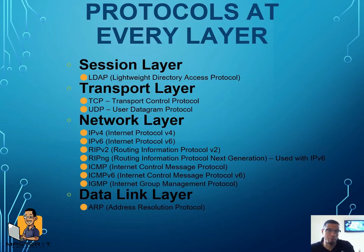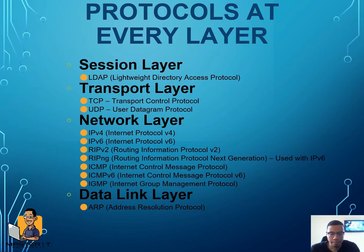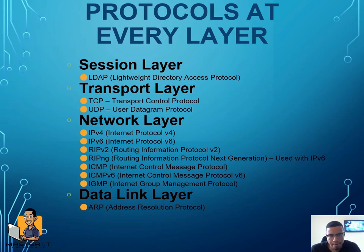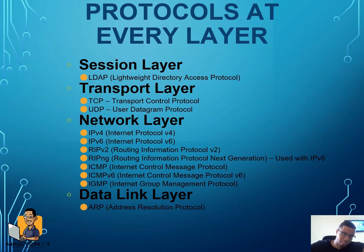Now I'm going to skip over the presentation layer, which is the sixth layer, and go to the fifth layer — the session layer. Then we have the transport, network, and data link layers. The session layer is layer five. One of the protocols that works there is LDAP, which is pretty much just a directory — like a yellow pages for the network. It's just a directory: where is everything, where is this, where is that?